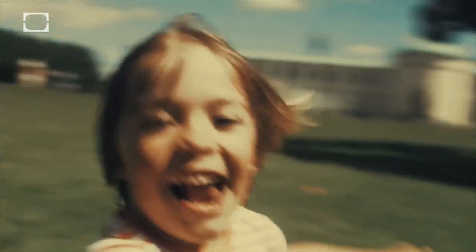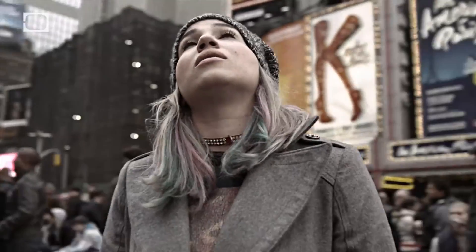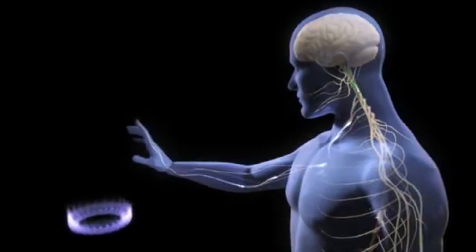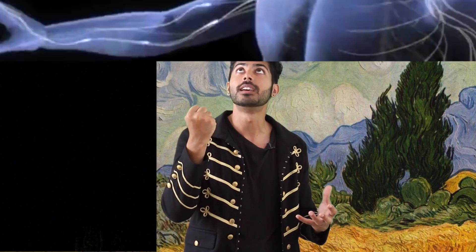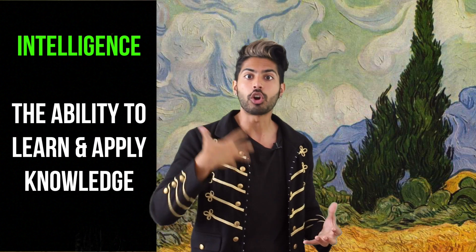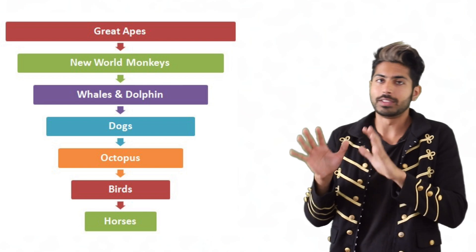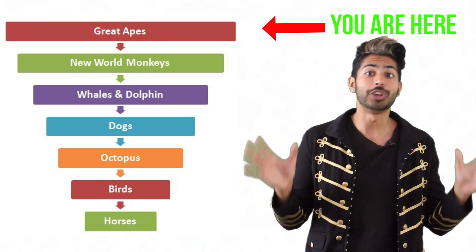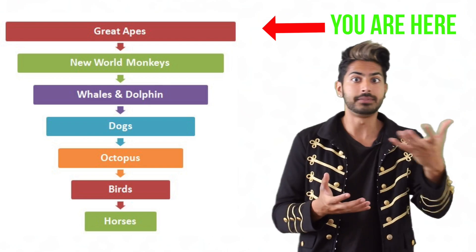As humans, we are constantly receiving data through our five senses and somehow we've got to make sense of all of this chaotic input so that we can survive. Thanks to the evolutionary process, we've developed brains capable of doing this. We've got the most precious resource in the universe: intelligence — the ability to learn and apply knowledge. One way to measure our intelligence against the rest of the animal kingdom is using a ladder. Ours is indeed the most generalized type of intelligence, capable of being applied to the widest variety of tasks.